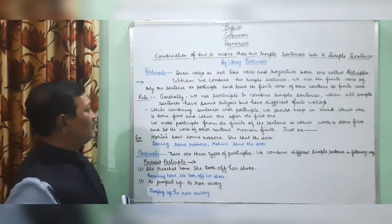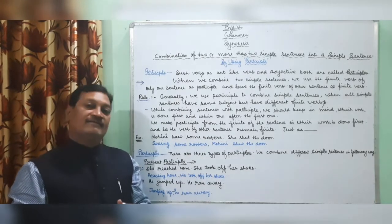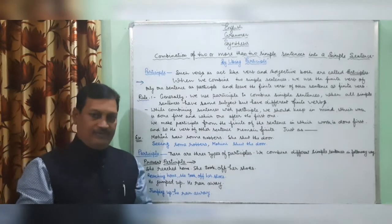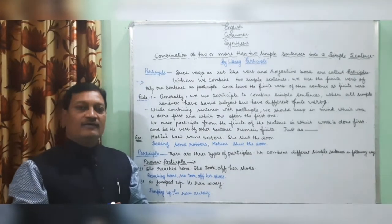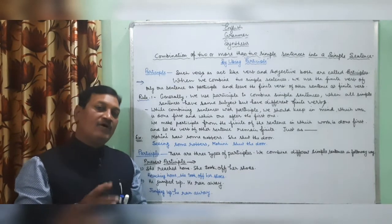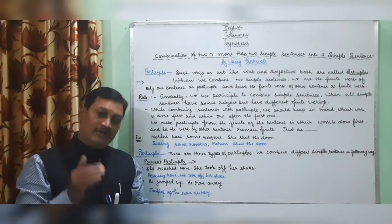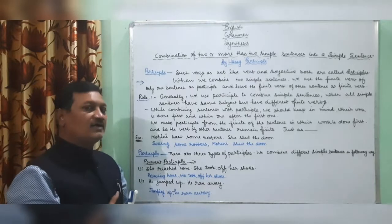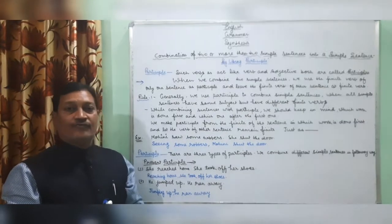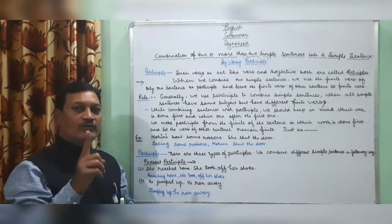Before I teach you the rule, I would like to tell you something about simple sentences. Simple sentences have only one finite verb — you should be very clear about that. The verb which changes according to the subject and tense is called a finite verb. So you should keep this fact in mind: a simple sentence has only one finite verb.